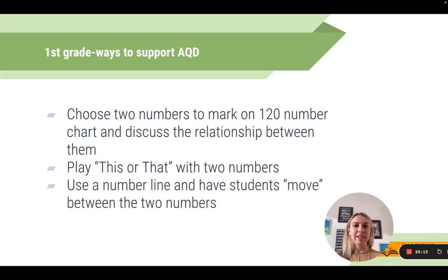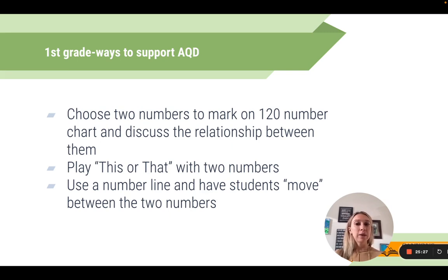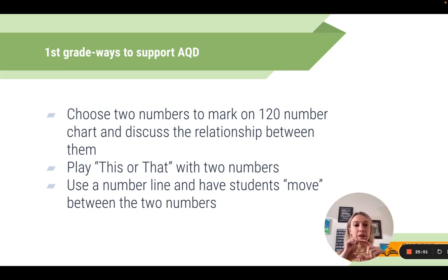That 'this or that' routine is helpful for K through 5, but first grade teachers focusing on AQD will find it especially useful. Last, have a life-size number line on the floor that students can skip count on or move between two numbers. During fall 2020, many of you purchased velcro dots for the floor — those might still be on your carpet. Put numbers on them and have students move between numbers that way.